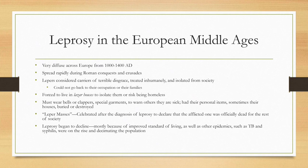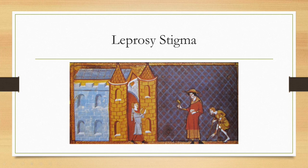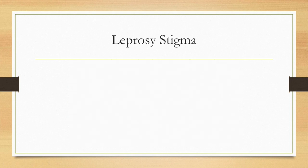Leprosy eventually began to decline because of improved standard of living and because TB and syphilis were decimating the European populations. It was likely brought over to the new world by European explorers and African slaves. In artwork depicting leprosy stigma, you can see people with visible lesions being refused entry to towns, holding clappers to announce their condition, with deformities making it difficult to walk. Some were treated even worse — burned at the stake in large groups to essentially rid them of the disease. There were leper towns where they were all isolated into one location.